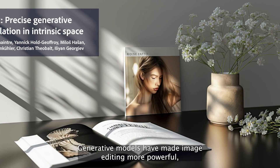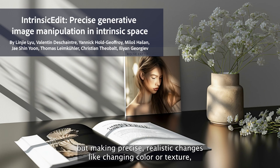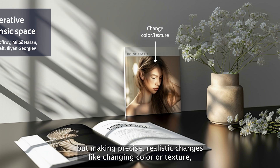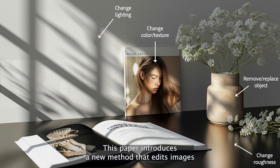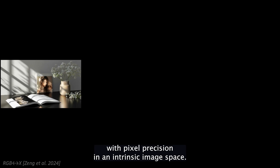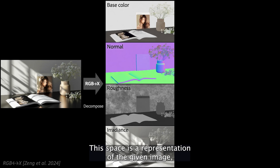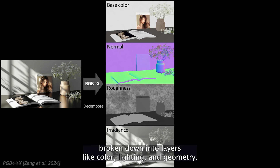Generative models have made image editing more powerful, but making precise, realistic changes — like changing color or texture, changing roughness, removing objects, or adjusting lighting — is still tricky. This paper introduces a new method that edits images with pixel precision in an intrinsic image space, a representation of the given image broken down into layers like color, lighting, and geometry.